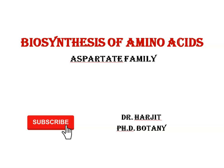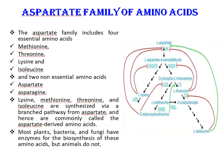Today we are going to talk about biosynthesis of amino acids, and in this lecture we will discuss the biosynthesis of amino acids belonging to the aspartate family. The aspartate family includes four essential amino acids and two non-essential amino acids. Essential amino acids are methionine, threonine, lysine, and isoleucine. Non-essential amino acids are aspartate and asparagine. Essential amino acids have to be obtained from dietary sources because we either lack the enzyme to synthesize them or make them in amounts that are not sufficient. Non-essential amino acids can be readily synthesized in the body.